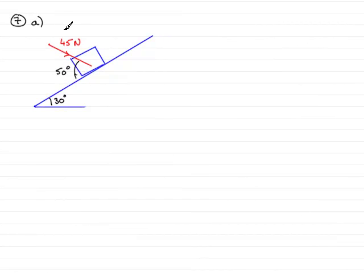In Question 7, Part A, we're given this diagram of a parcel on a rough inclined plane and a force of 45 newtons acting at 50 degrees to the plane.